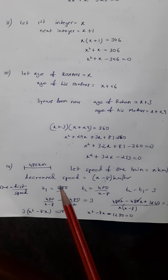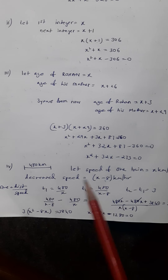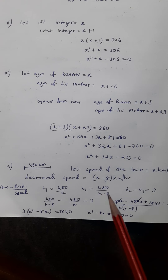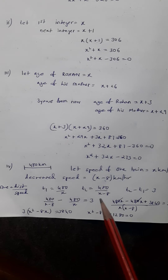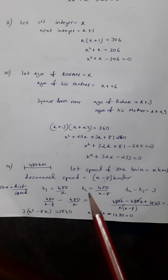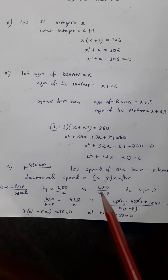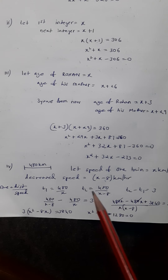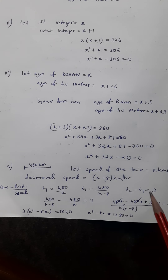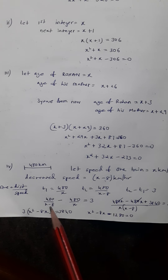The difference in time is given as 3 hours. Many people get confused about whether T1 minus T2 is 3 or T2 minus T1. The trick is: the slow vehicle always takes more time. So the slower train corresponds to T2, which is greater than T1. Therefore we write T2 minus T1 equals 3. If you do it the opposite way, you will get a wrong answer.